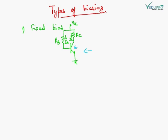In the fixed bias circuit, the collector is connected to RC (the collector resistance) and the base is connected to RB. The emitter is directly grounded. The supply VCC is connected to the top. The current through the base is IB and the current through the collector is IC. The voltage between base and emitter is VBE, and VCE is the voltage between the collector and emitter.